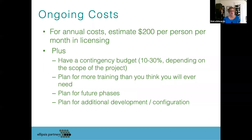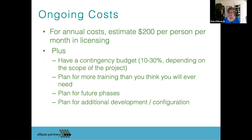Have money in your back pocket — a contingency budget. That could be 10% or it could be 30%, depending on the scope of your project. The smaller the project, the higher the percentage; the bigger the project, somewhat lesser the percentage. But have some contingency money available for when things get delayed, because they will. Plan for more training than you think you'll ever need, because that's a key part to having a system adopted.